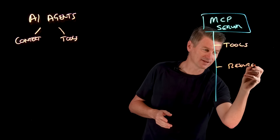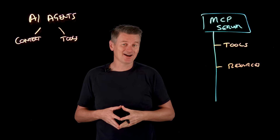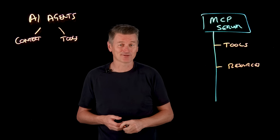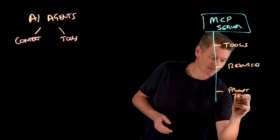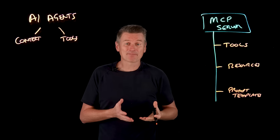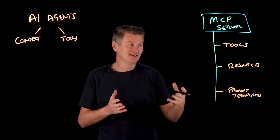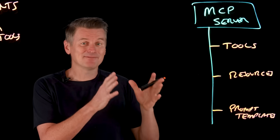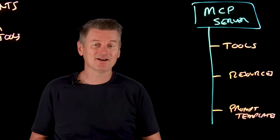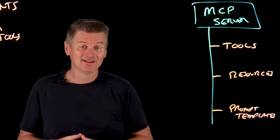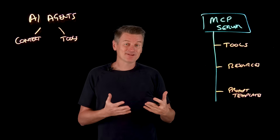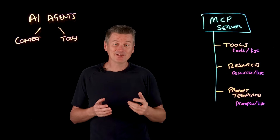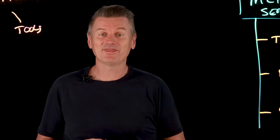Another primitive is resources — read-only data items or documents the server can provide, which the client can retrieve on demand. Things like text files, database schemas, and file contents. There are also prompt templates, which are predefined templates providing suggested prompts. Not every MCP server will use all three primitives; many just focus on tools currently. Importantly, an AI agent can query an MCP server at runtime to discover what primitives are available and invoke those capabilities in a uniform way, because every MCP server publishes a machine-readable catalog — tools/list and resources/list — so agents can discover and use new functionality without redeploying code.